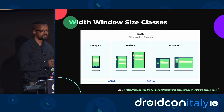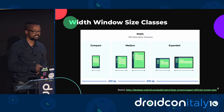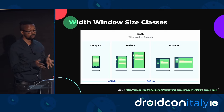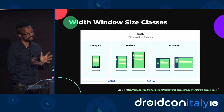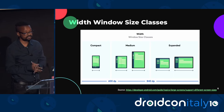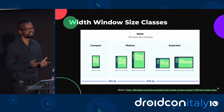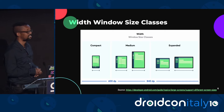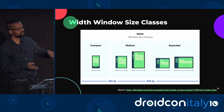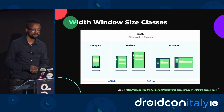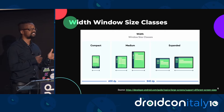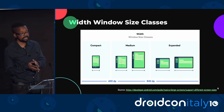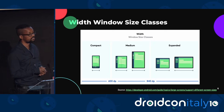The compact window size class is for devices with a width of less than 600 dp, and represents about 99% of phones on the market today. The medium width window size class is for devices with a width between 600 and 840 dp, representing about 93% of tablets as well as large unfolded inner displays. Expanded caters for a width greater than 840 dp and represents about 97% of tablets in landscape, as well as large unfolded inner displays in landscape.